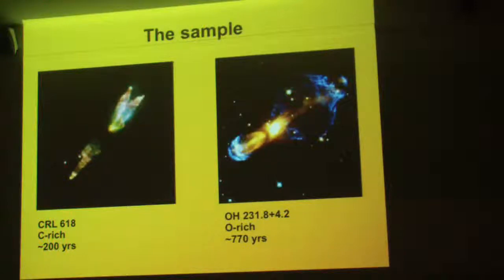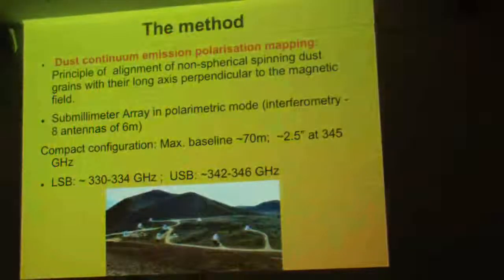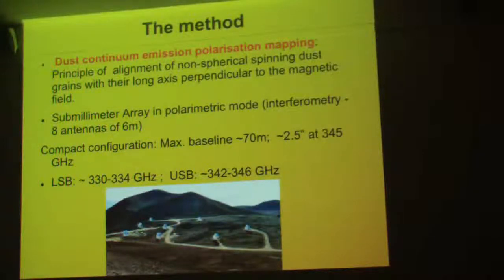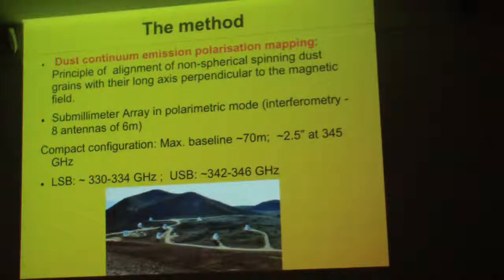We divided our sample with one carbon-rich and one oxygen-rich object. CRL 618 is slightly younger than the Calabash Nebula. We are going to use dust continuum emission polarization mapping — basically, we observe the dust. When you have magnetic fields and paramagnetic, non-spherical, spinning dust grains, with time they will align with their long axis perpendicular to the magnetic field.